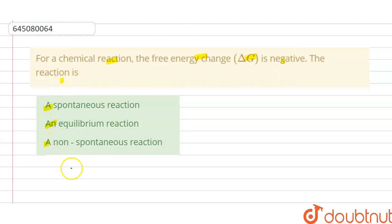So we have to choose the correct option. The solution of this question is: we know that delta G is negative, that is free energy change is negative for spontaneous reaction.